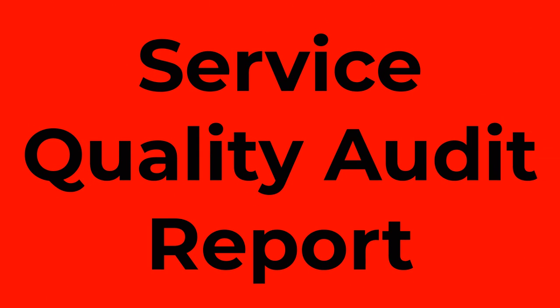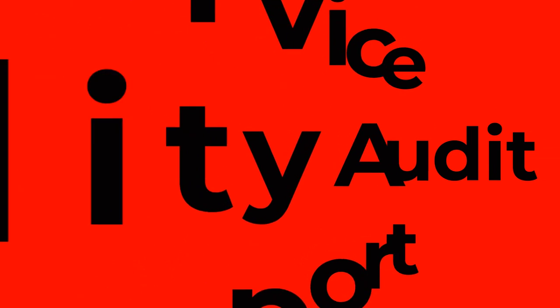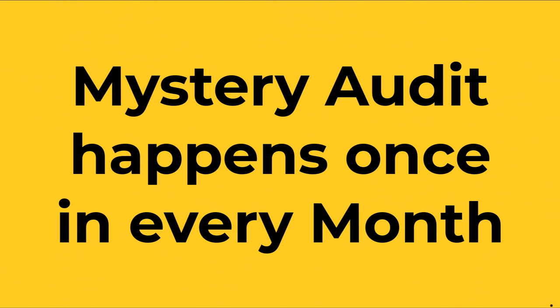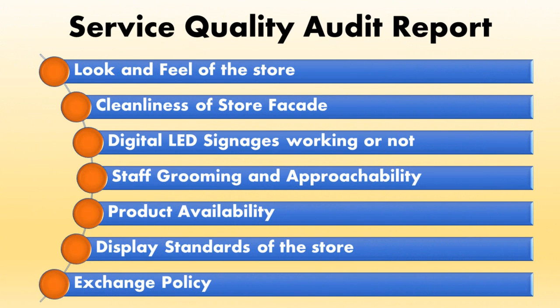The seventh report is the service quality audit report, also called the mystery audit report. It evaluates the service level and service standards of a given retail store. The mystery audit happens once every month and the auditor judges the store on parameters including look and feel of the store, cleanliness of the store façade, whether digital LED signage is working, staff grooming and approachability, product availability, display standards, and exchange policy.